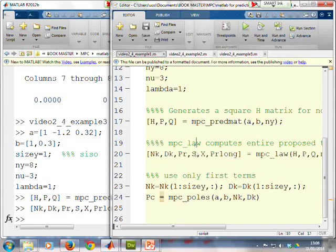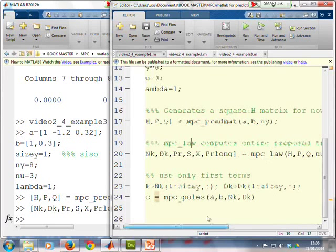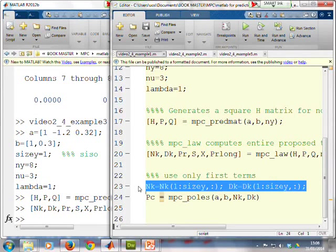Now, the point is here, you'll see that little note. This computes the entire trajectory. It computes the entire delta U future. So if we only want the first increment, then we've got to take the first row of N_k, D_k.